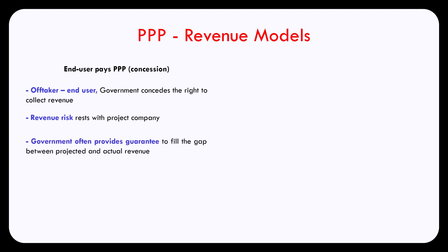Often, especially in developing countries, a concession agreement is accompanied by government guarantees, which can take different forms. For example, the government may guarantee to fill the gap between projected and actual revenue, covering any shortfall, or the government may provide a minimum revenue guarantee to the project company, or some other form of support, just to ensure that the cash flow the project company is supposed to receive is guaranteed. This guarantee is backed by the government, which is typically a creditworthy authority, and if such a guarantee is in place, it helps make the project bankable.